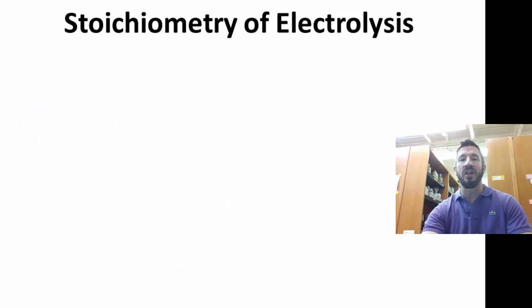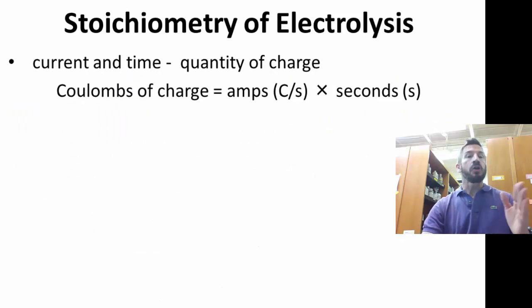So stoichiometry of electrolysis. A couple of things. Current and time is a quantity of charge. We're going to say coulombs of charge is going to be amps, which an amp is a coulomb per second, times seconds. And that's going to give us coulombs.